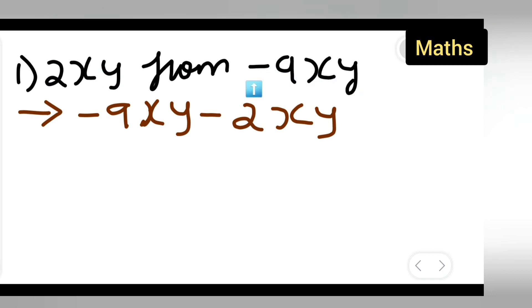So -9xy minus 2xy. Next, write down this is equal to... Now xy is common in both, so first thing you can write down -9 minus 2. Take the xy term outside.